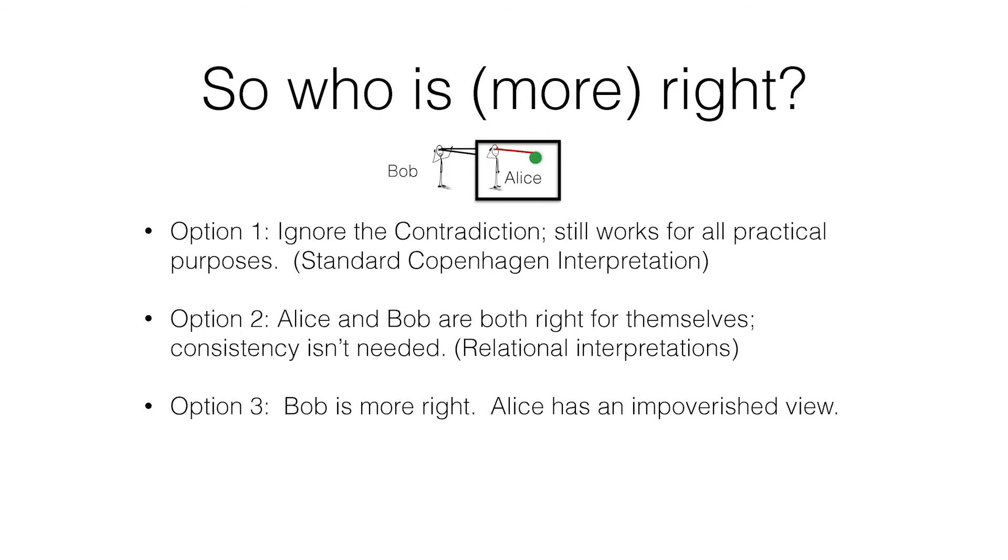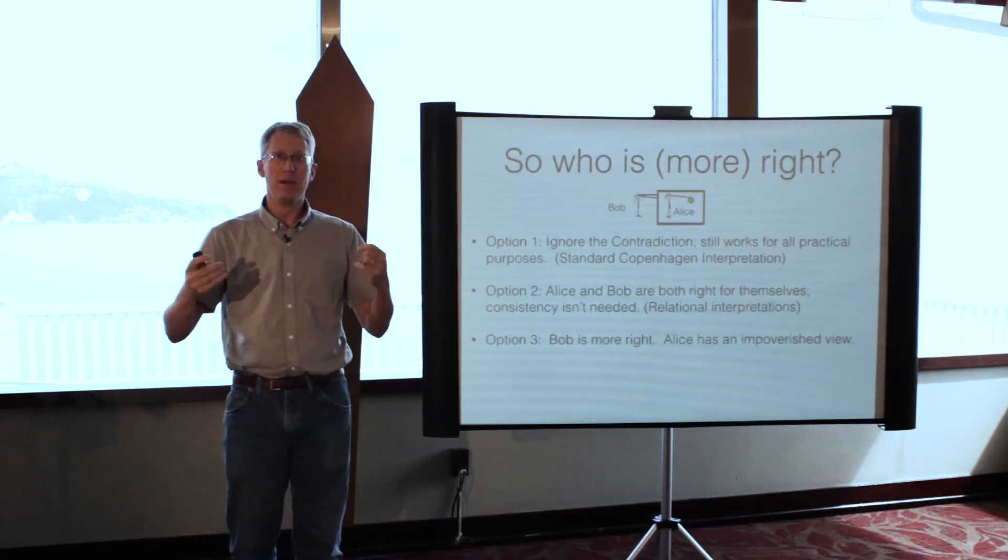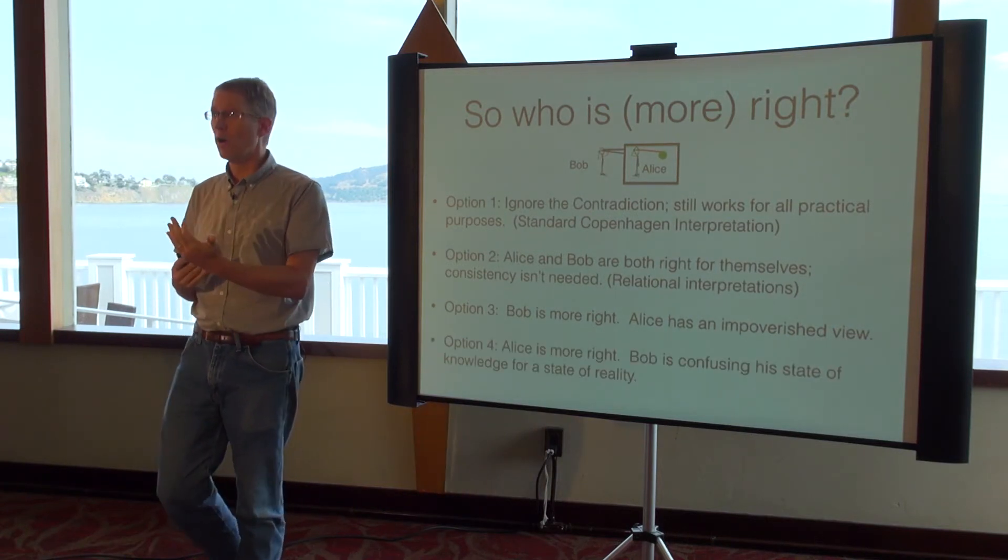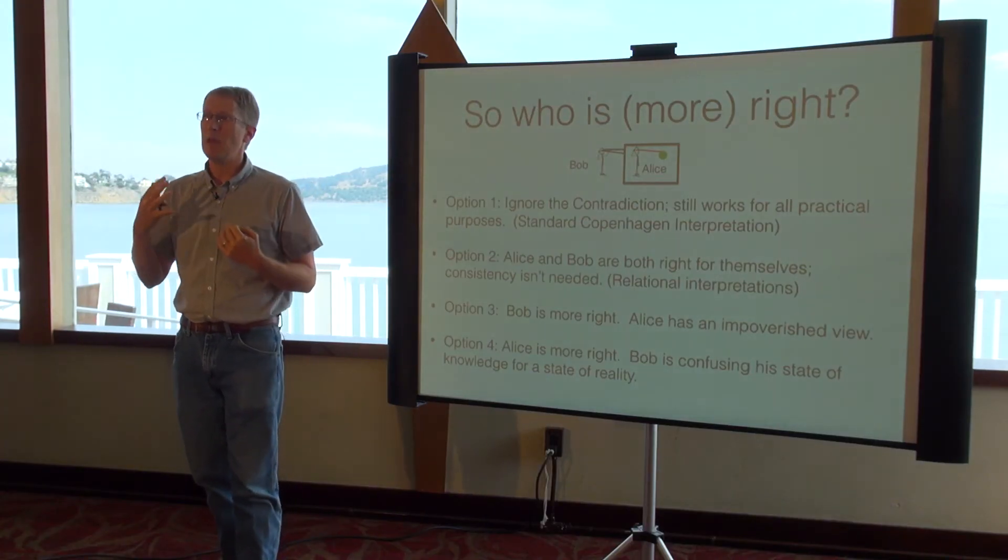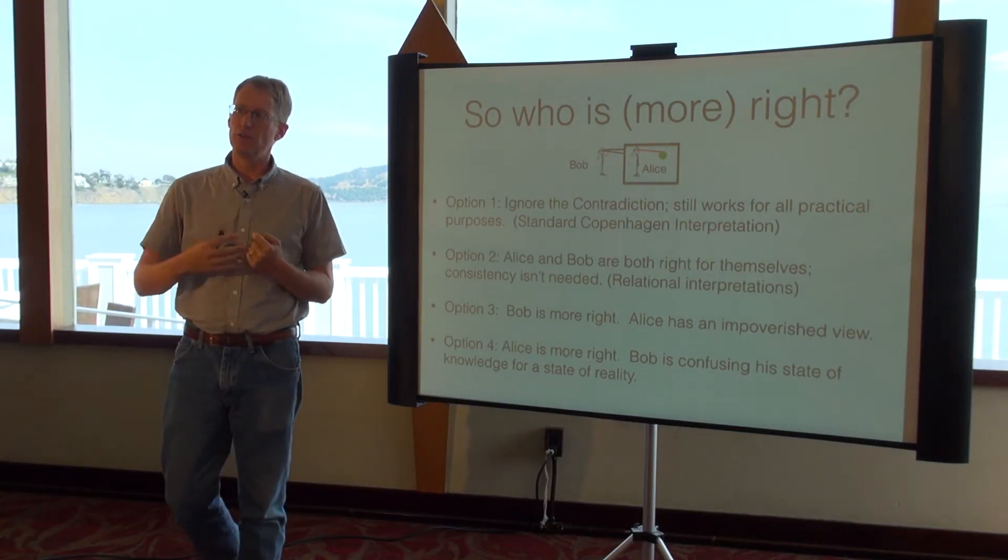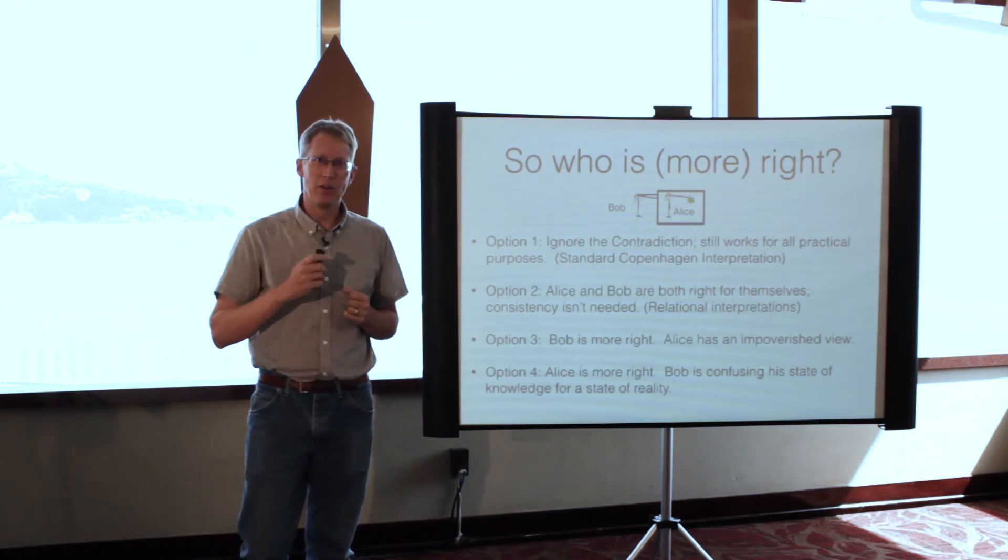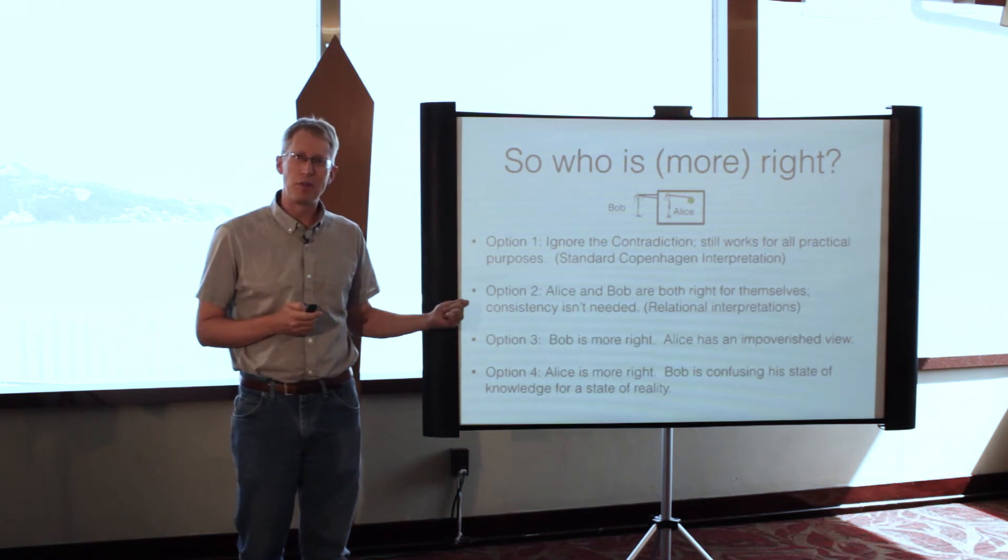One option is that Bob is more right. He is on the outside, the bigger perspective, and Alice has an impoverished perspective being in a smaller system. Bob is a better case. I'll talk more about this in a sec. But obviously option four is the other way around: Alice is more right. She's seeing reality directly and Bob might be doing some big state of knowledge of what Alice sees, but maybe he's confusing that state of knowledge for a state of reality. Let's talk about these last two options in some detail. Bill and I will have a bit of a debate—I think he's going to take option three and I'll take option four.